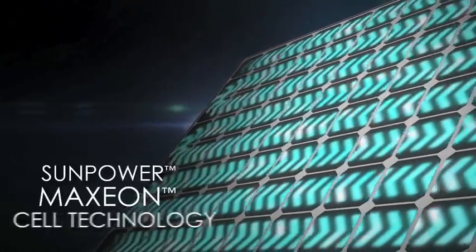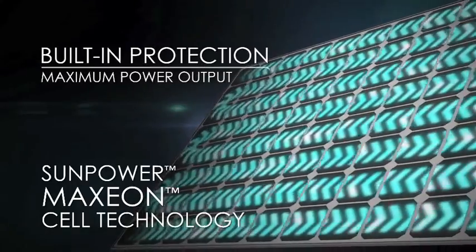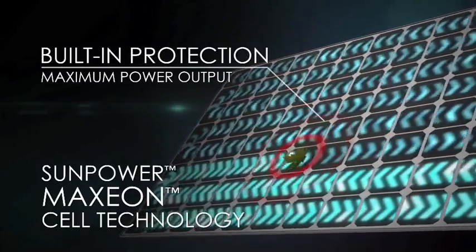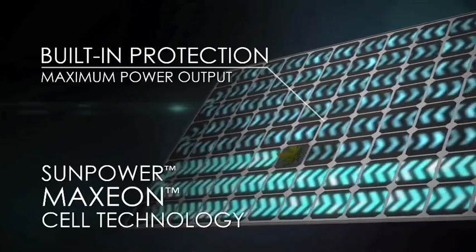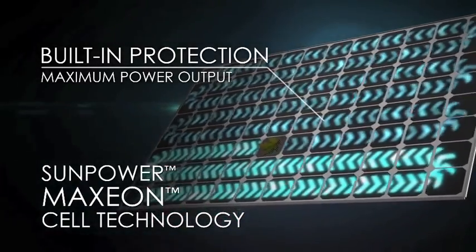SunPower's patented Maxeon cell technology is optimized with built-in protection, so that if and when a leaf or anything else shades a cell, only the shaded cell powers down, resulting in far less power loss.